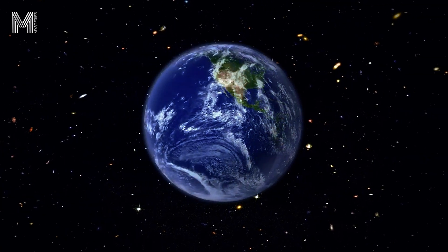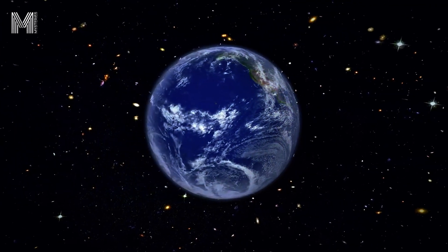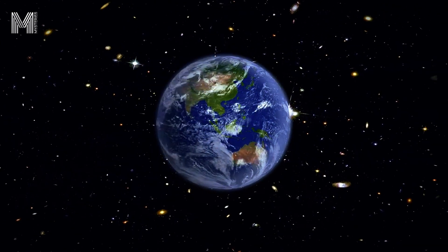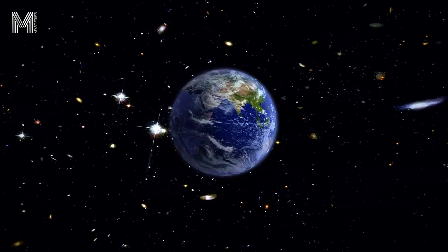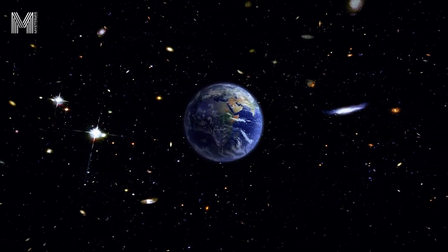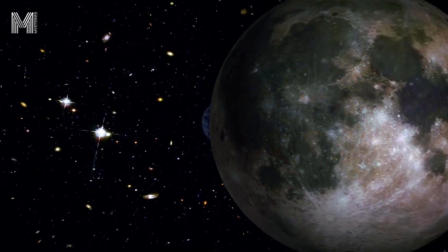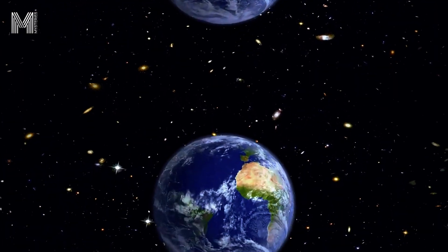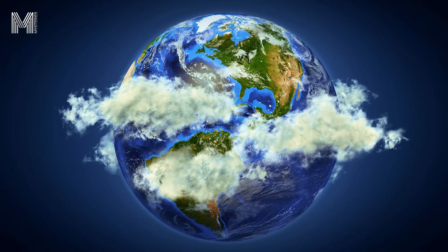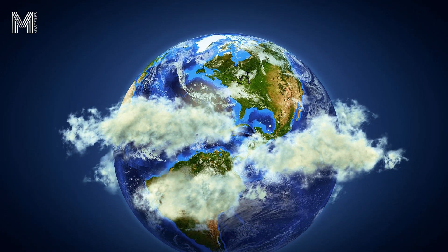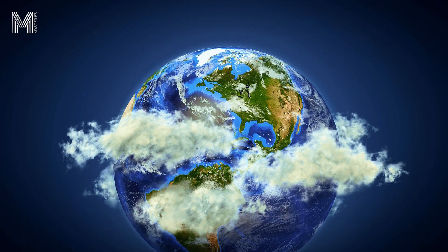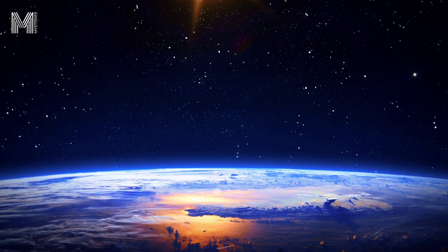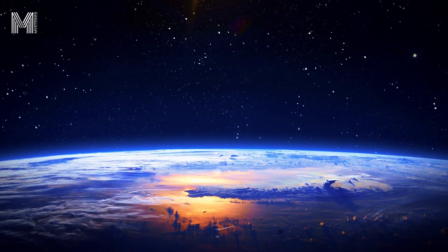Imagine that life on earth did not begin here, but rather in some distant part of the universe. This is the fascinating idea behind the panspermia theory. According to this theory, life, or at least the microorganisms that gave rise to it, may have arrived on our planet aboard comets, asteroids, or even particles of space dust. The notion is that before becoming a habitable planet, earth could have been a receiving location for life forms that traveled through the cosmos.